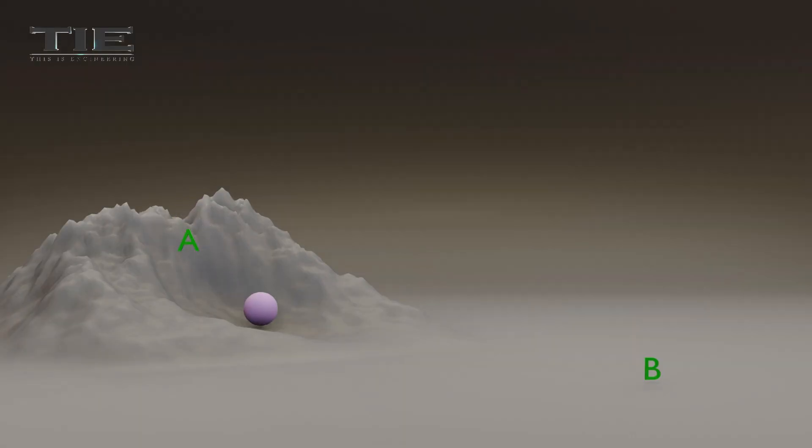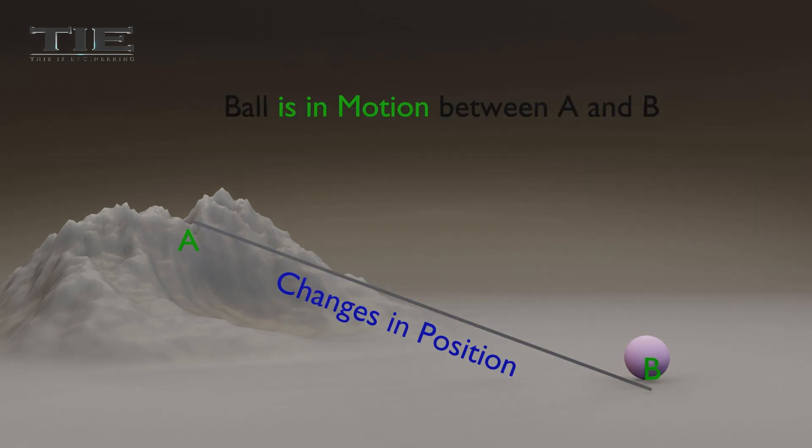Here, a ball released at the top of a hill rolls down due to gravity, so the position of the ball changes when it moves downhill. The ball is in motion between position A and B, not before A and after B.